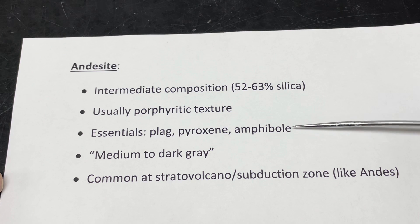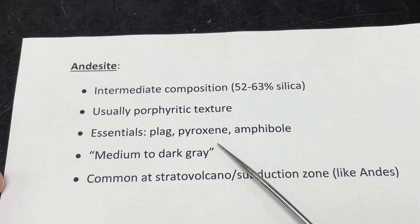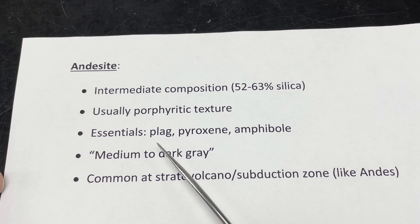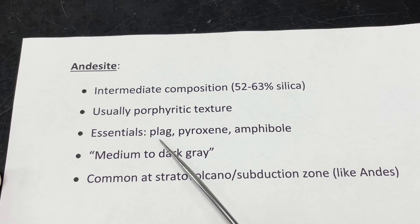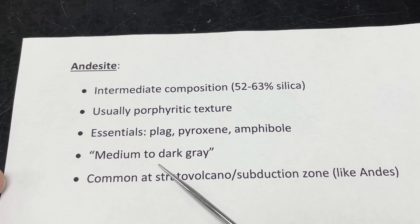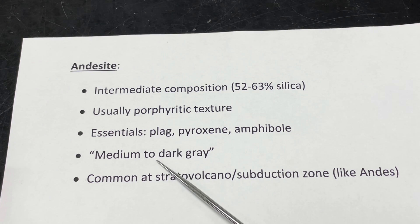The essential minerals in andesite include plagioclase feldspar, pyroxene, and amphibole. Pyroxene and amphibole are mafic minerals, so they'll tend to be dark in color. Plagioclase is typically white in rocks and has two cleavage planes at 90 degrees, so it tends to form rectangles or squares. The color of andesite is kind of a medium to dark gray — a vague reference, but roughly medium gray with some variability.